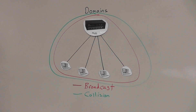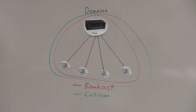The same thing applies for a collision domain — a collision domain is any place where nodes are contending for access to the network. In a hub environment, that area is where collisions can occur. One workstation can send a frame at the same time that another workstation attempts to send a frame, and if they both try at the same time, there will be a collision.